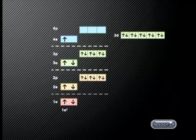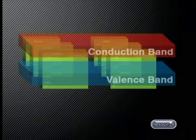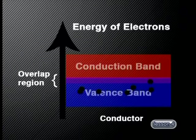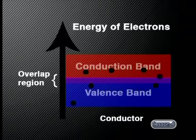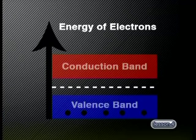To explain our macroscopic observations, we used a model of what is happening at the microscopic level called energy band theory. In all materials, the energy levels of individual atoms overlap to form energy bands. The energy band that contains the outer electrons is called the valence band. The energy band formed by empty energy levels after the valence band is called the conduction band. In metals, the valence band and the conduction band overlap. When a potential difference is applied across the ends of a metal, electrons gain energy and can move freely through the conduction band.